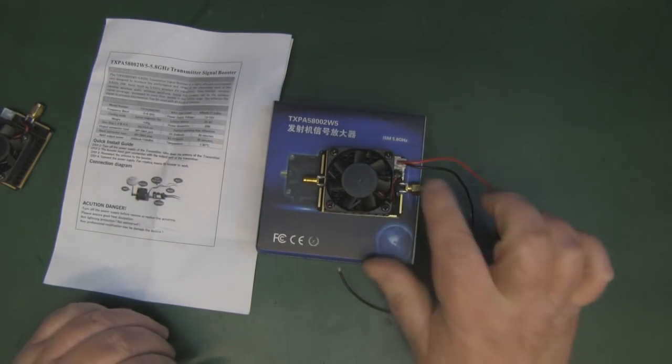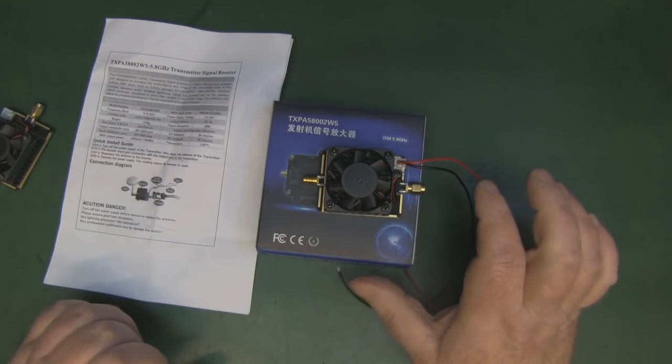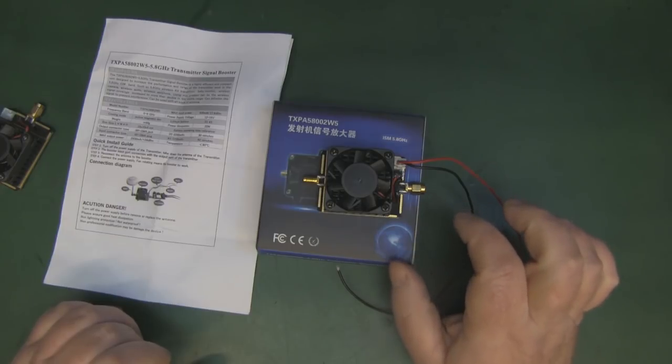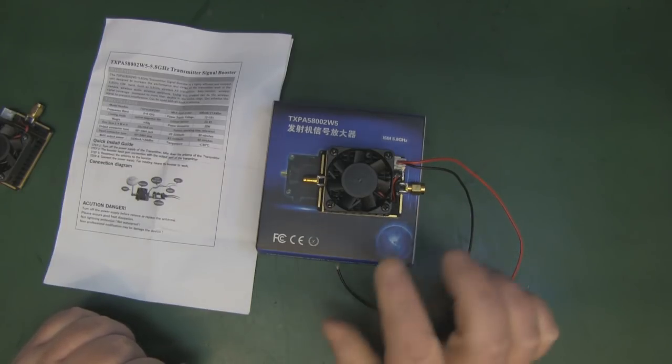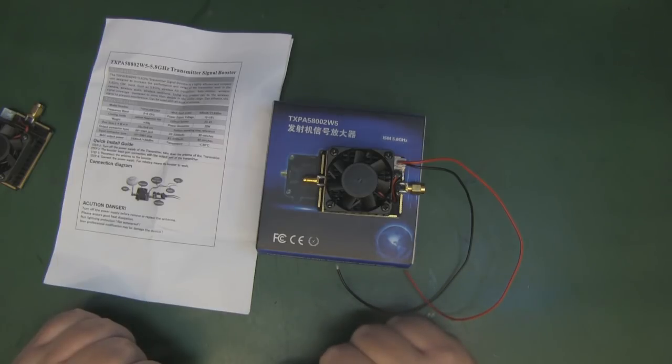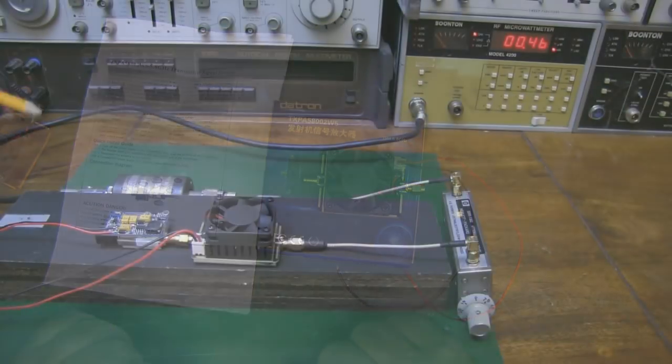So what I thought we'd do is take this over to the test bench. The first thing I want to test is if it's putting out the three watts of power when I put a 200 milliwatt transmitter onto this. That's something we can easily test over on the bench with the power meter.